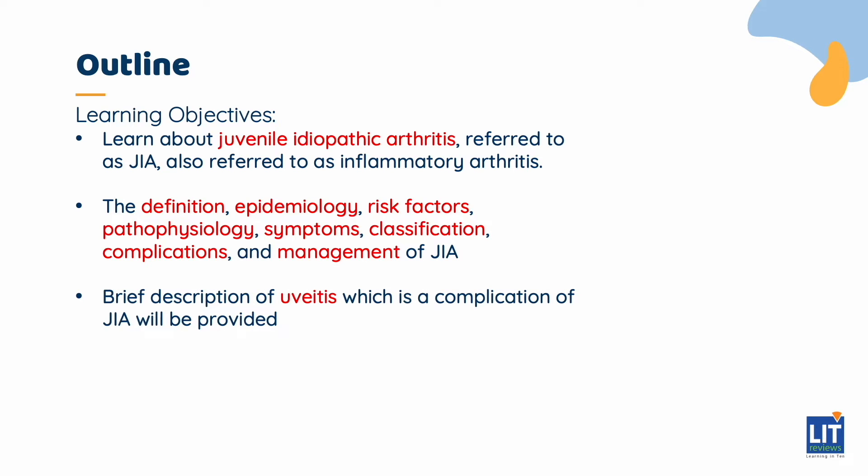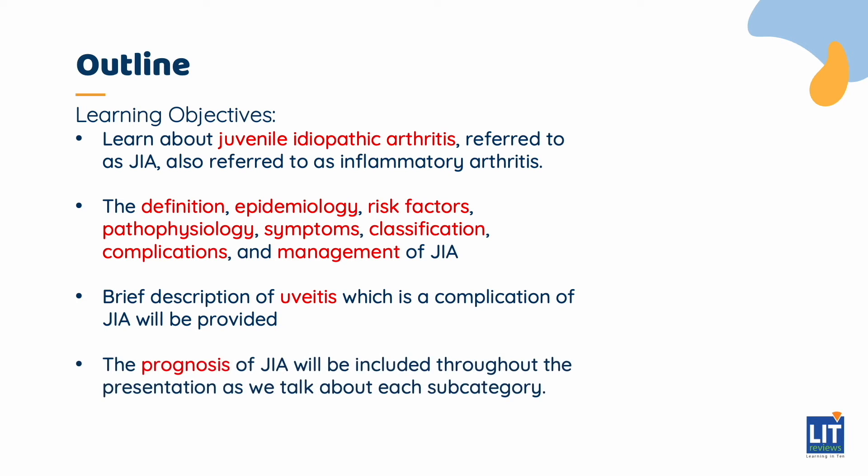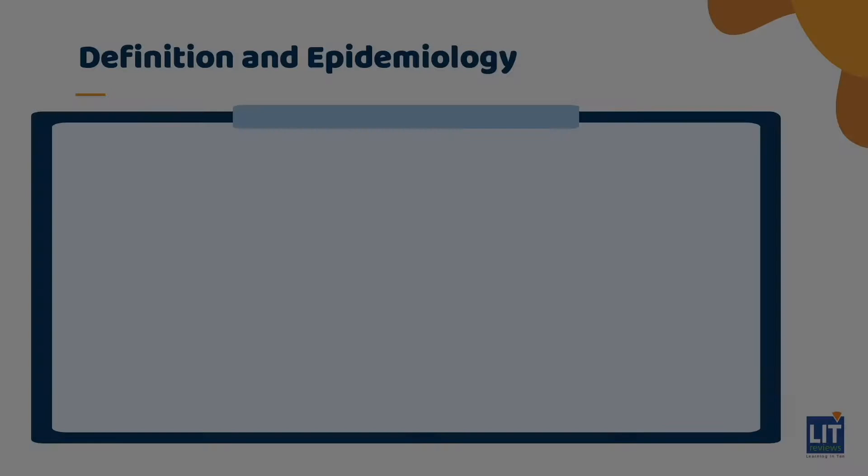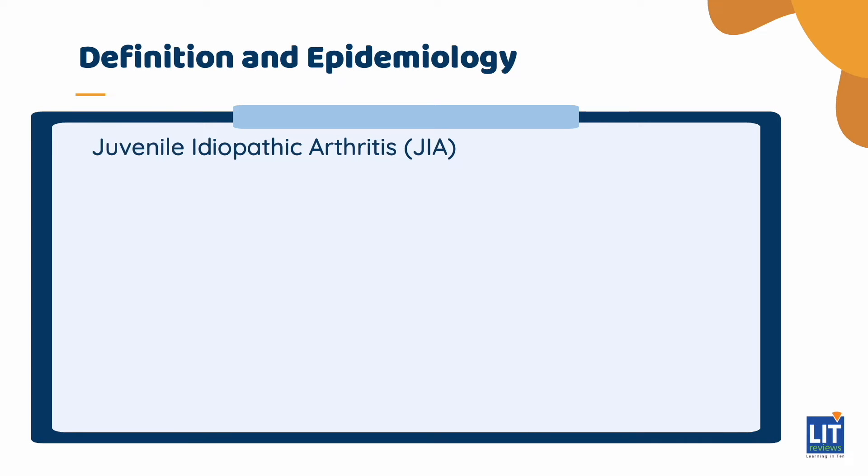In addition, a brief description of uveitis, which is a complication of JIA, will be provided. And finally, the prognosis of JIA will be included throughout the presentation as we talk about each subcategory. So what is juvenile idiopathic arthritis?